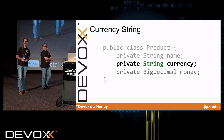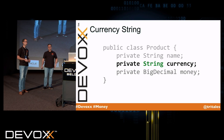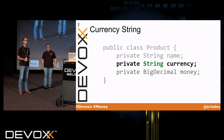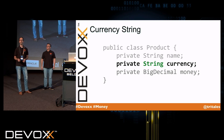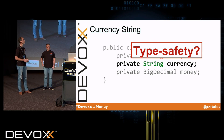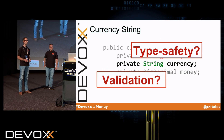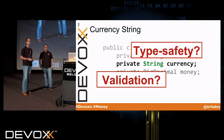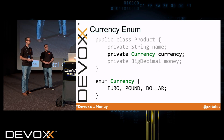If our program deals with a single currency, then we're totally fine. But quite often this is not the case, and we need to model our currency. So let's use a type String for our currency. Well, clearly this is not a good design, because what about type safety? And what about validation? The string can be anything that's not a valid currency. So we improve it a bit and use an enum.